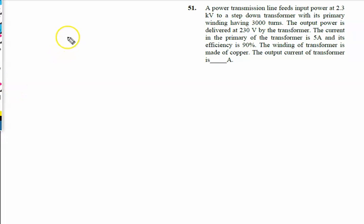A power transmission line feeds input power at 2.3kV. The transmitter power input is given by 2.3kV to 2.3 x 10 raised to power 3V. This is the input voltage, V input, because it is involved.